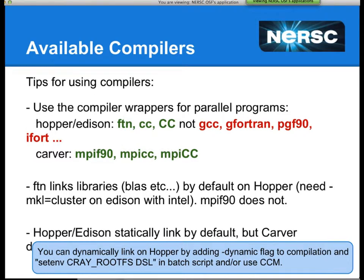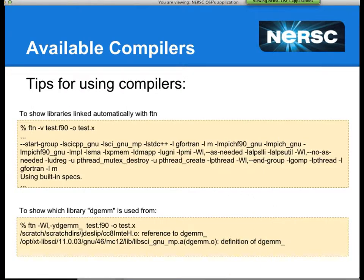There are ways to run dynamically linked executables on Hopper if you really need it — consult the web page, as it usually involves setting an environment variable or using Cray compatibility mode (CCM). Here's an example of FTN -v output: compiling a simple helloworld.f90, you can see everything FTN gives you for free, including LibSci which provides BLAS, LAPACK, and ScaLAPACK. And using the -Wl,-y trick, you can see that DGEMM is coming from libsci_new.mpa.